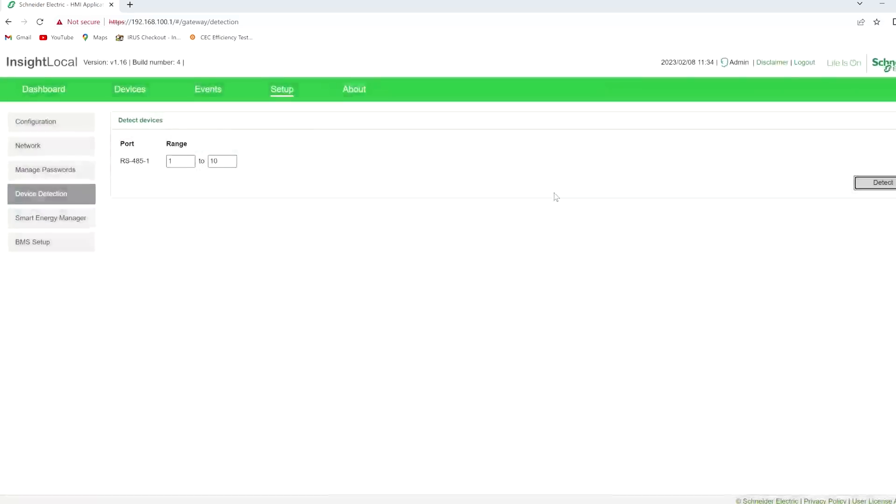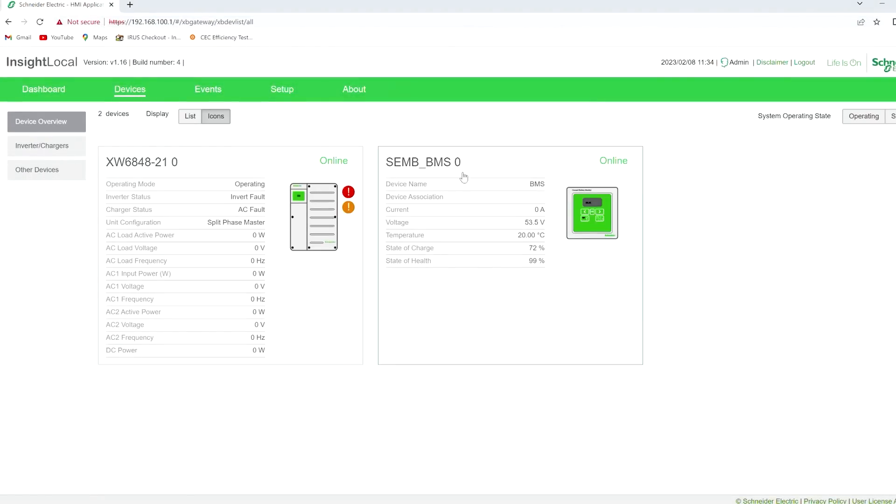It says it found one device. That's perfect. Now we'll go back to devices. And wow, this is the first time this screen right here has popped up. Now the little icon, that actually looks like their battery monitor, which is their kind of shunt based device to monitor battery. So that must be the default image that Schneider is using for any BMS. Now it's called the SEMB BMS. And that's very great.